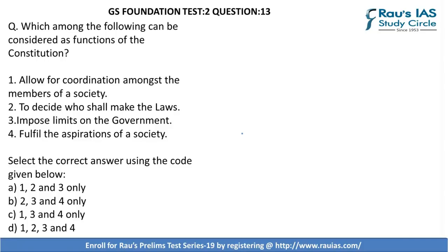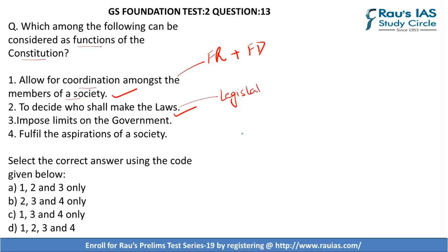Question 13 asks: which among the following can be considered as functions of the Constitution? This is an understanding-based question. First — allow for coordination amongst members of society — is right, as the Constitution provides for fundamental rights and duties governing how citizens and members of society should interact. Second — to decide who shall make the laws — is also correct, because the Constitution lays down the method of election of the legislature and the manner in which it will function. Third — impose limits on the government — is correct; the fundamental rights in Part 3 are the main fetters on the powers of the government.